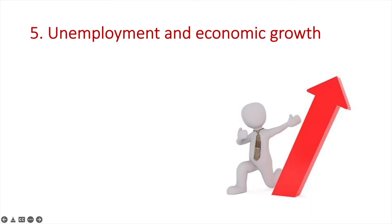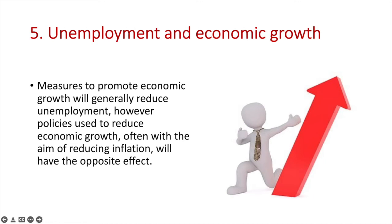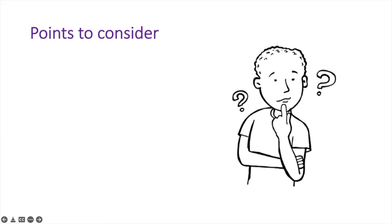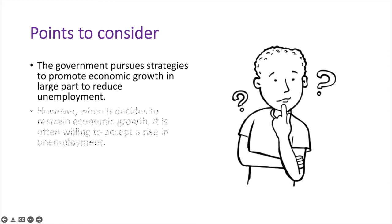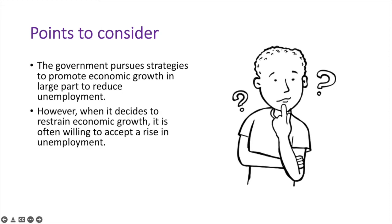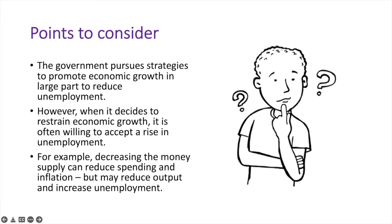Fifth is the relationship between unemployment and economic growth. Measures to promote economic growth will generally reduce unemployment. However, policies used to reduce economic growth, often with the aim of reducing inflation, will have the opposite effect. It's important to remember that the government pursues strategies to promote economic growth in large part to reduce unemployment. However, when it decides to restrain economic growth, it is often willing to accept a rise in unemployment. For example, monetary policy aimed at lowering inflation by decreasing the money supply can reduce output, but it will increase unemployment.